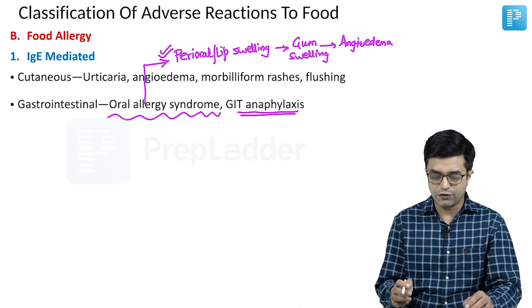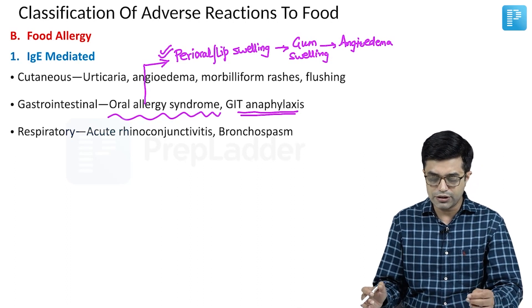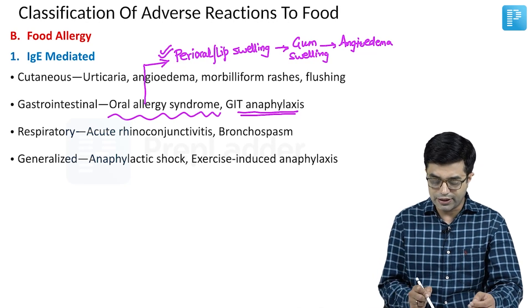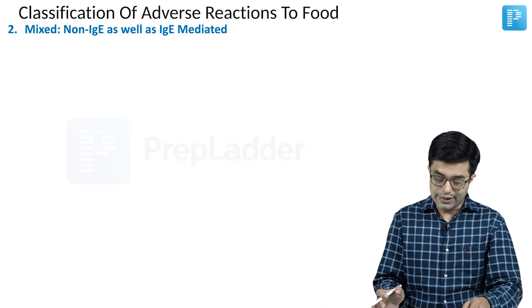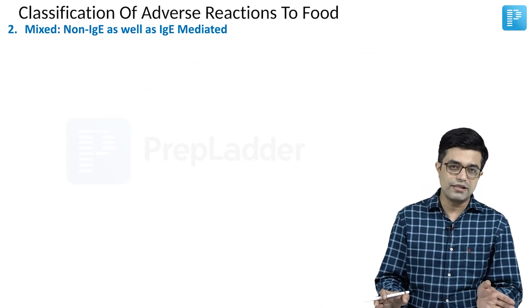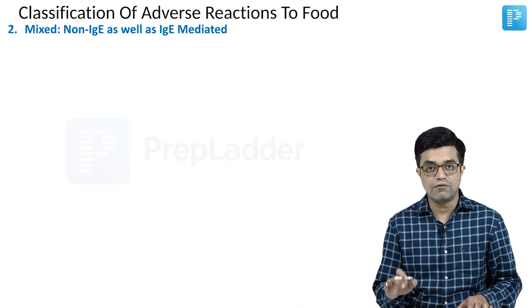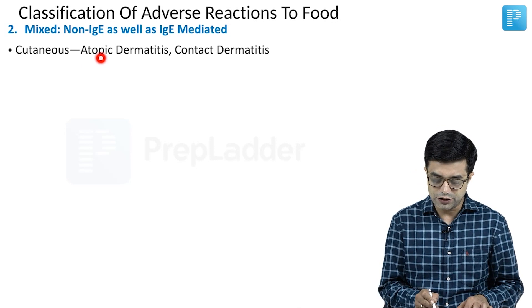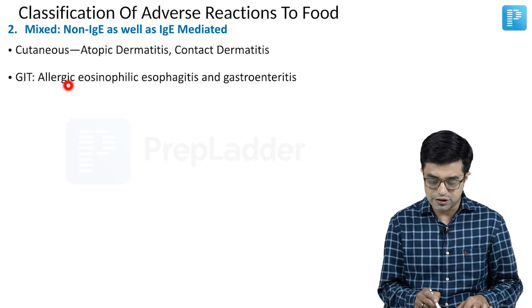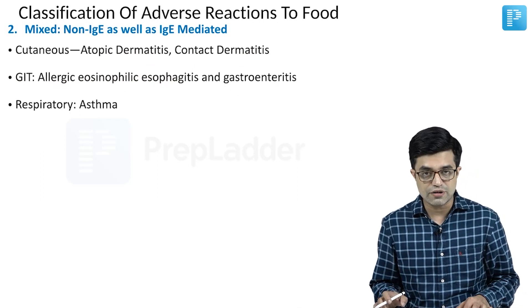GIT anaphylaxis is another form of food allergy. Respiratory features include acute rhinoconjunctivitis and bronchospasm. Generalized food allergies include anaphylactic shock and exercise-induced anaphylaxis. The second category is mixed reactions — both IgE-mediated and non-IgE-mediated — including cutaneous reactions like atopic dermatitis and contact dermatitis, GI forms like allergic eosinophilic esophagitis and gastroenteritis, and respiratory reactions like asthma.